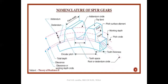Now we are going into the detail of the nomenclature of the spur gear. The terminologies we are using include: addendum, dedendum, face width, addendum circle, top land, base and flank of the teeth, total depth, working depth, clearance, pitch circle, and addendum and dedendum circle. We will see each and every term in the next slide.